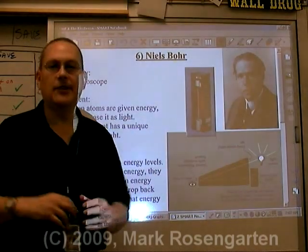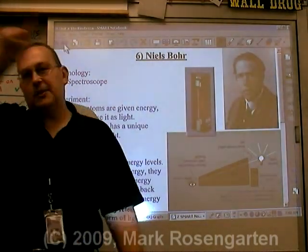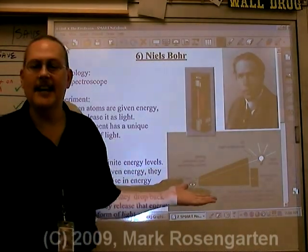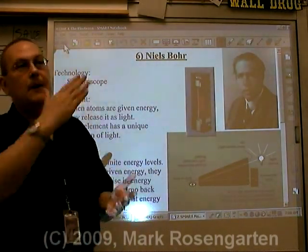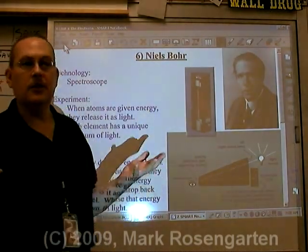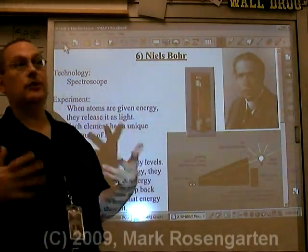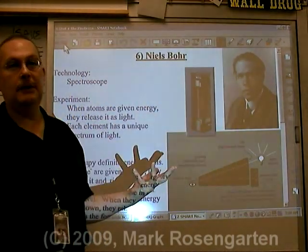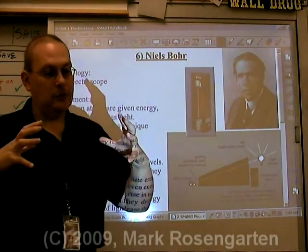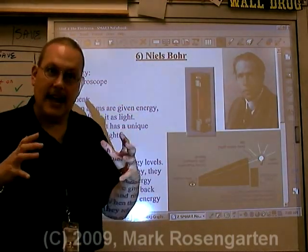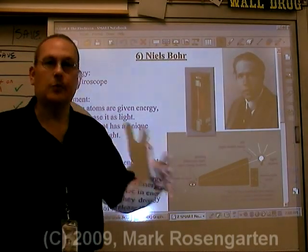Then came Niels Bohr. Bohr said he liked the nuclear atom, but there was one problem: those negative electrons and positive nuclei are going to attract each other, and the electron should just spiral in and crash into the nucleus pretty much instantaneously. Why don't they? Niels Bohr used the recent discovery of spectral lines. When you pass light through a spectroscope, it breaks it up into individual colors, and he reasoned those colors must have come from somewhere. An element's spectrum is always the same no matter where you find that element, so the spectrum must have something to do with the structure of the atom. He reasoned that atoms have electrons in energy levels, and when you give an atom energy, the electrons rise up in energy level, and when they fall back down they release that energy in the form of light. The electrons must stay in those energy levels, and this is what keeps them from crashing into the nucleus.